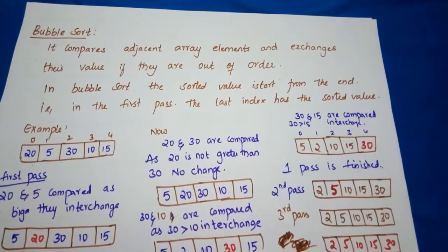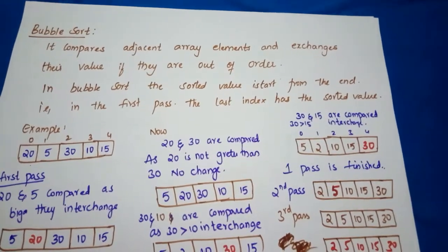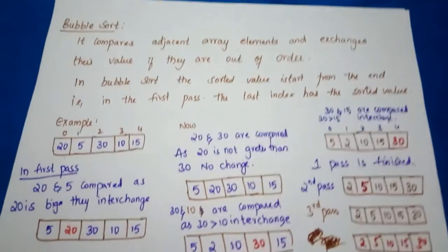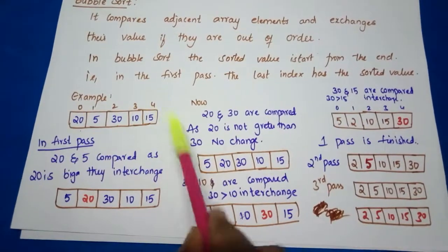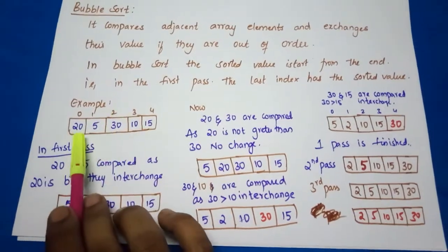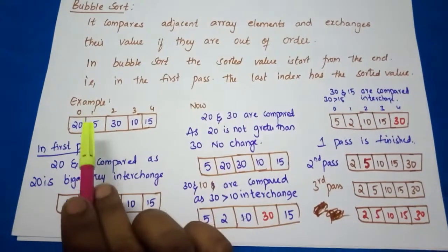We'll look at the example now. In this example: 20, 5, 30, 10, 15. What we are doing is comparing adjacent elements.